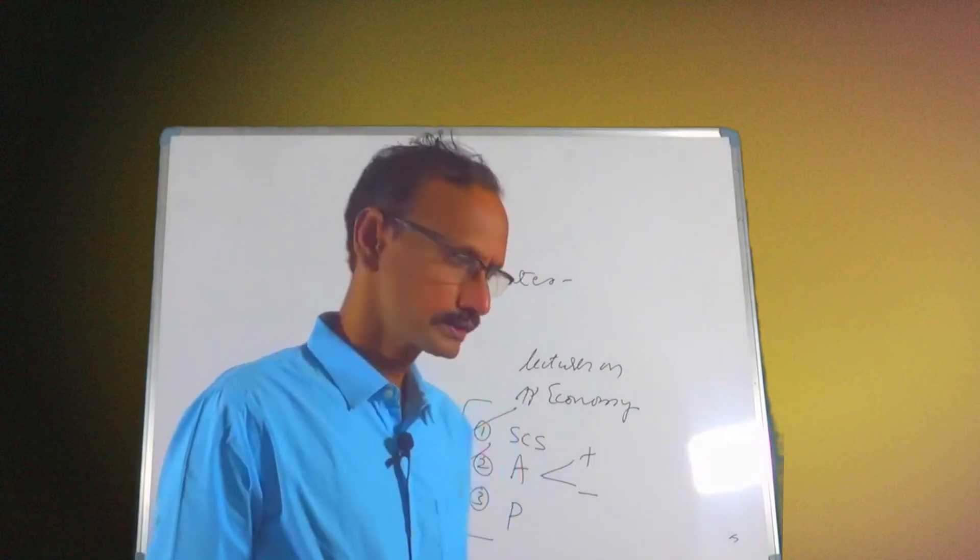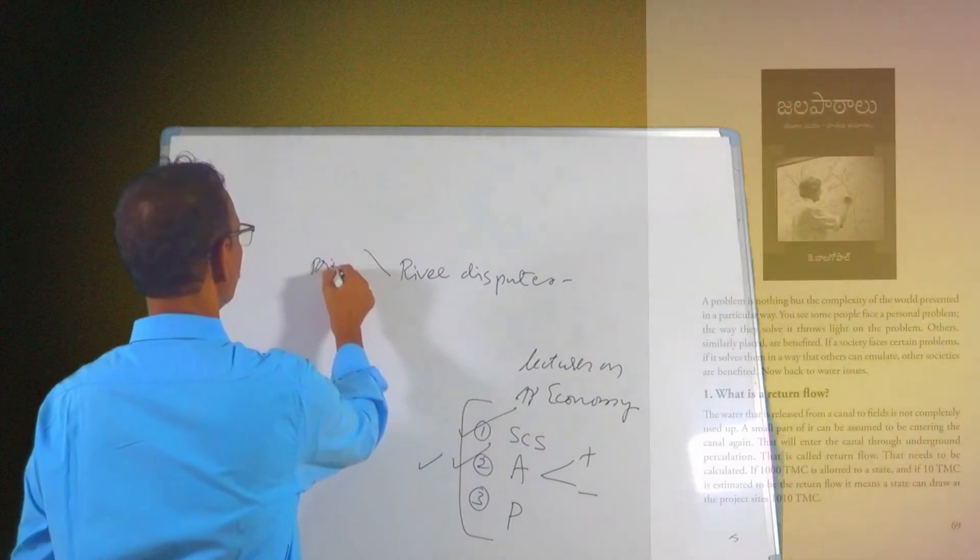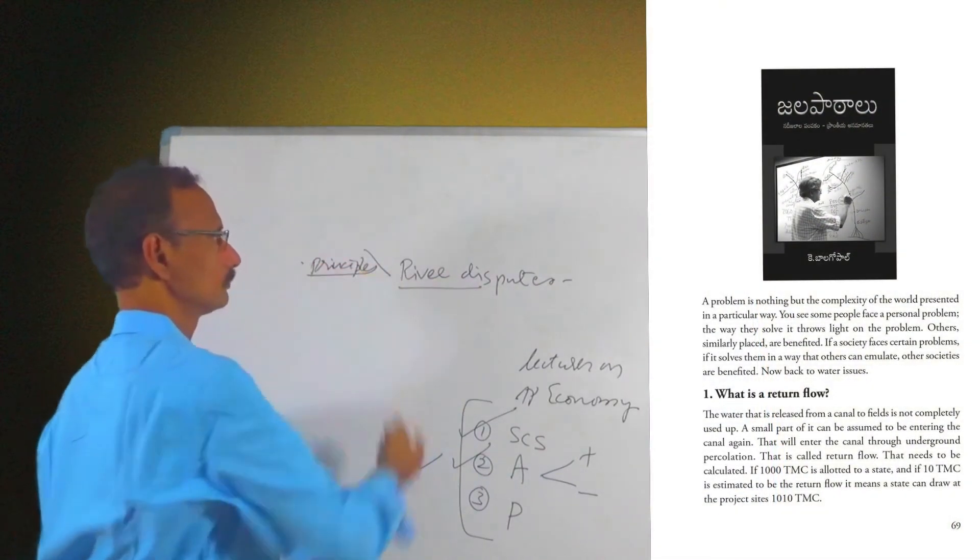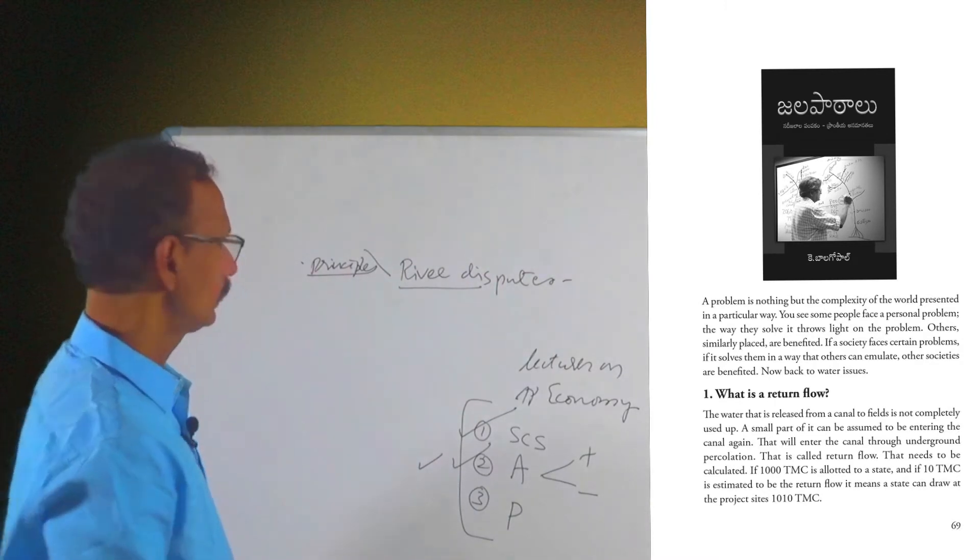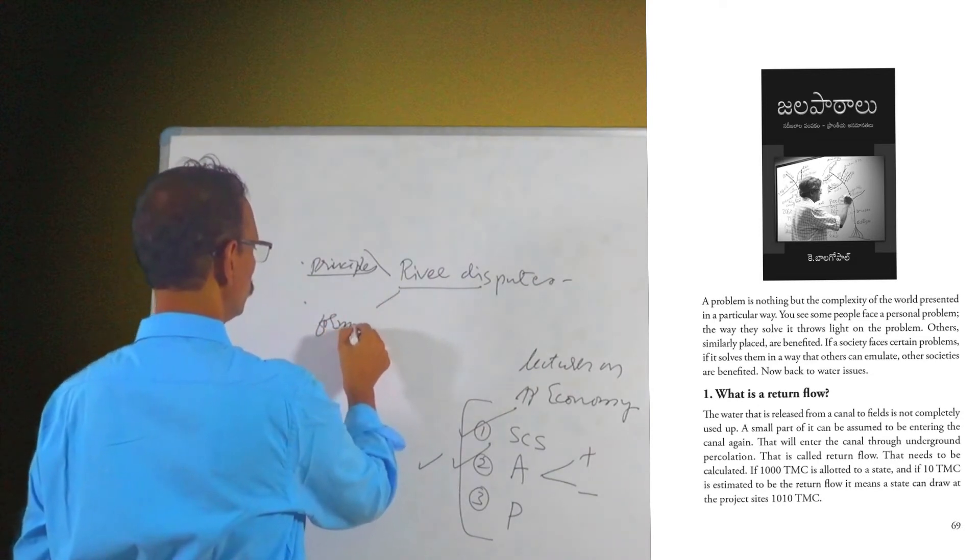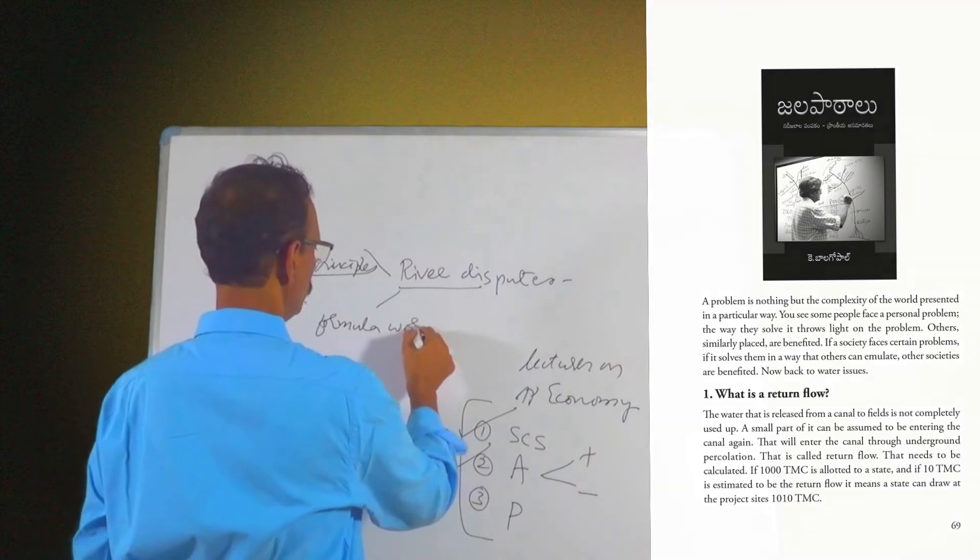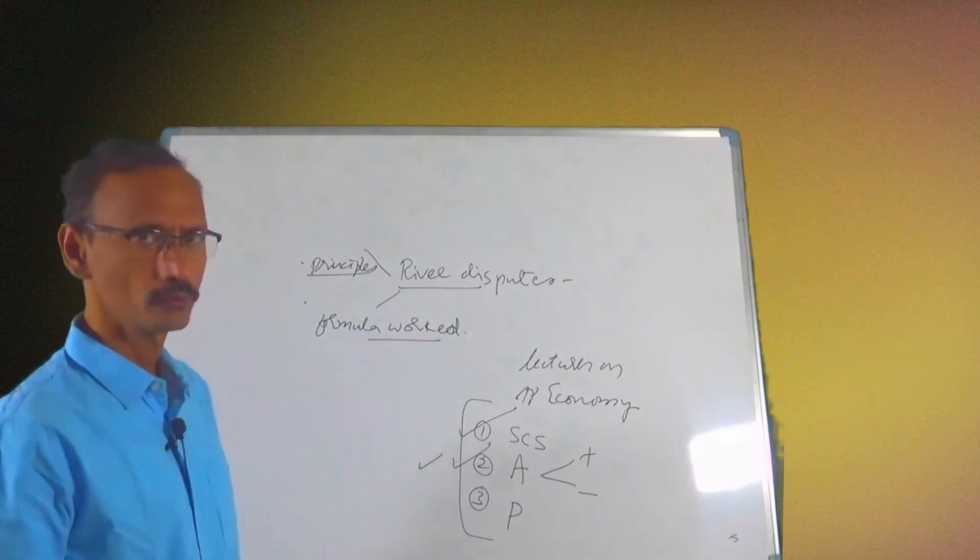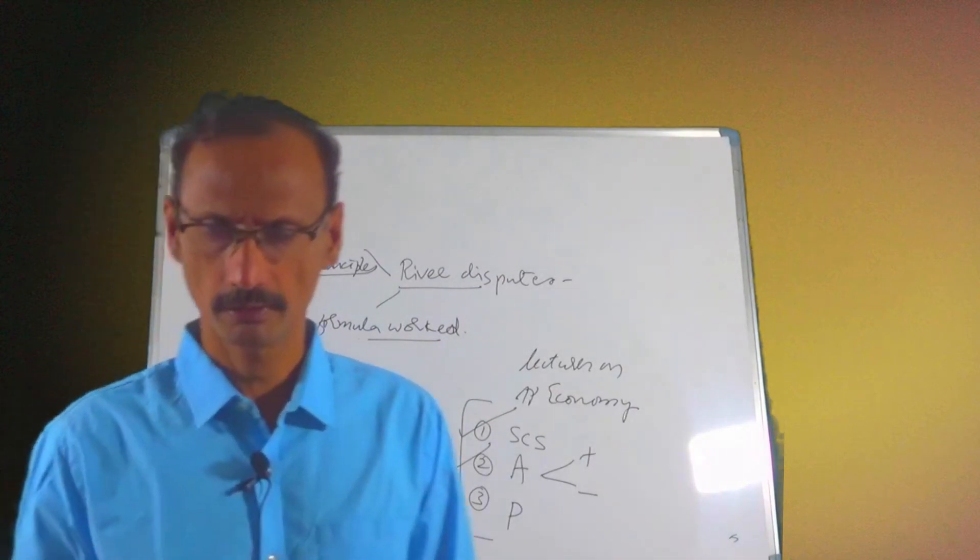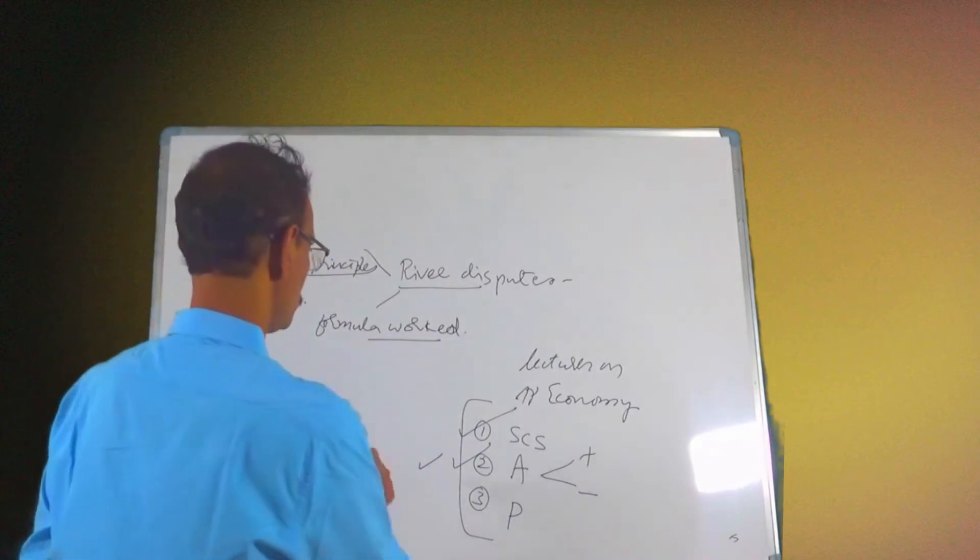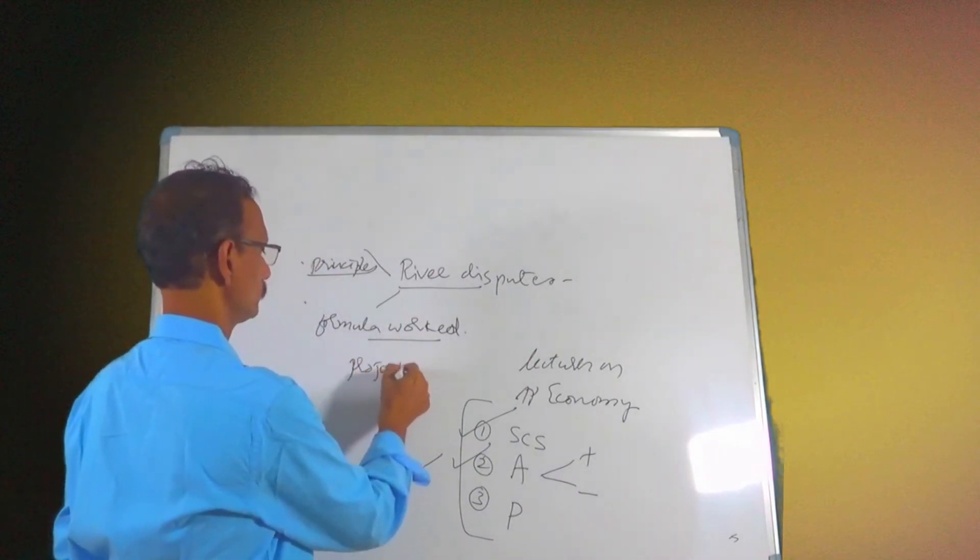It discusses principles of how disputes should be shared and then how river sharing formulas worked in Andhra Pradesh. You get a detailed account of Krishna water, Godavari water and various projects.